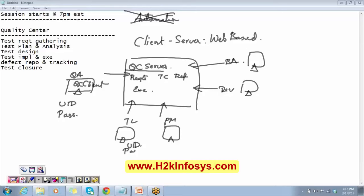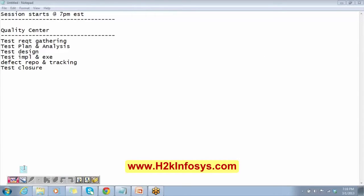Is it clear what Quality Center is and why it is used? We call it Mercury Quality Center because it was developed by Mercury, and the license is currently with HP. On your computers, both the Quality Center server and client are installed. Quality Center is also now called ALM — Application Lifecycle Management. Test Director was the older version; Quality Center is the current name, and ALM is the latest version. It's just a change of name.